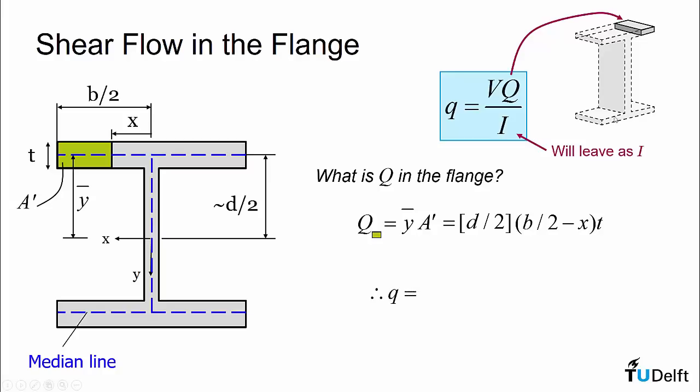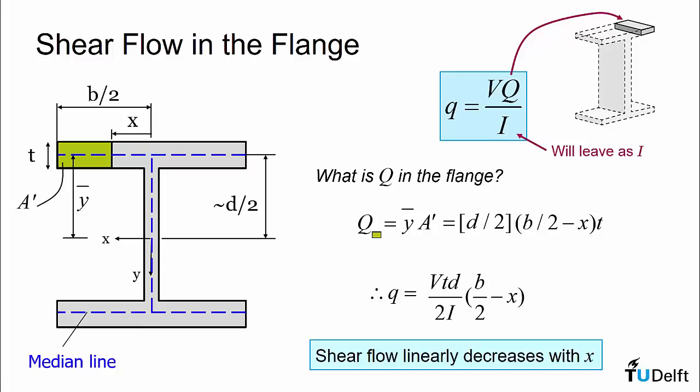Therefore, I can take this expression, substitute it into our original value for q, v is constant, given by the problem, and I will be left as I for this problem. And we will get that q, or little q, shear flow, is v times t times d divided by 2I multiplied by bracket b over 2 minus x, close bracket. What we can recognize from this is that shear flow linearly decreases with x.